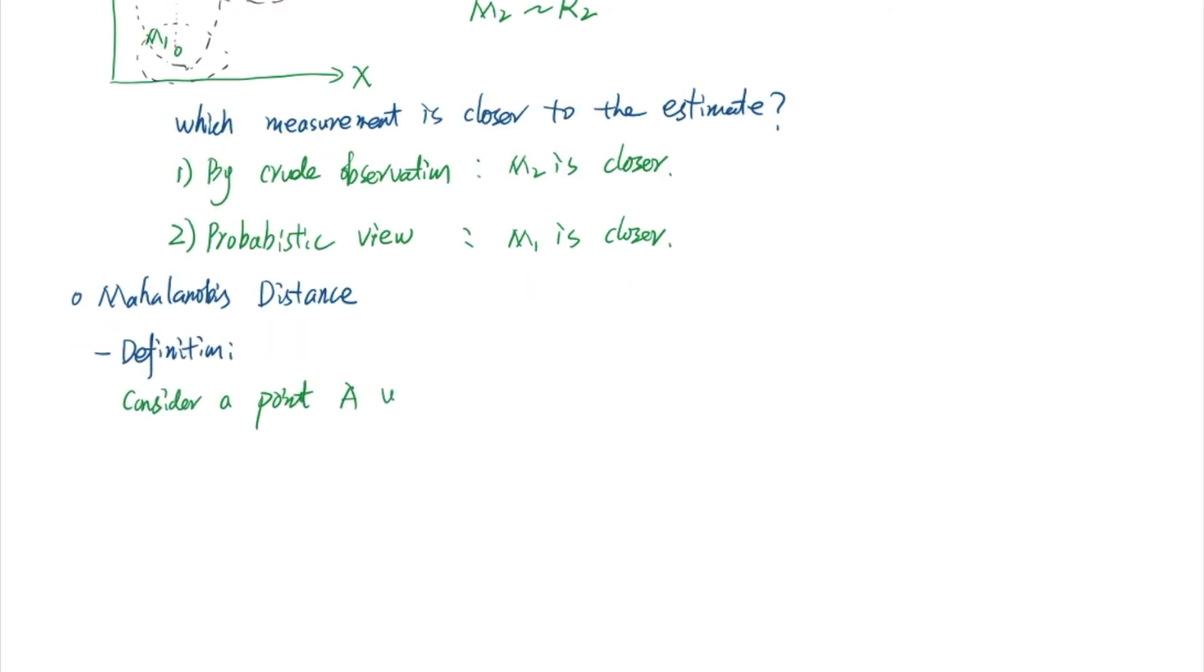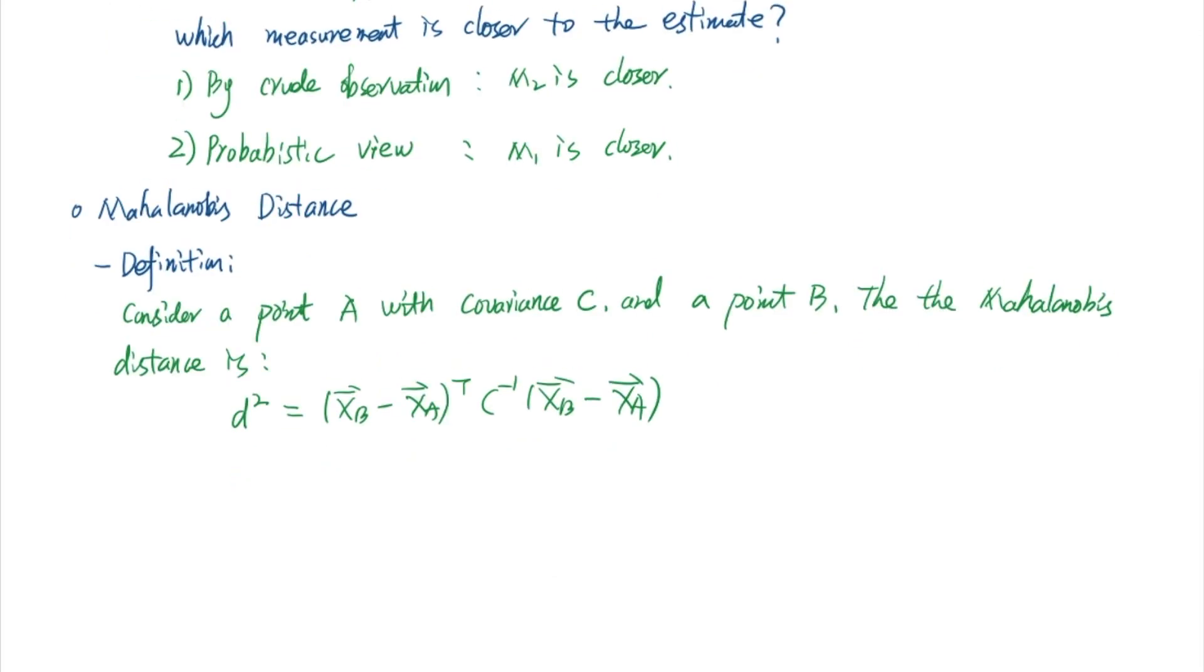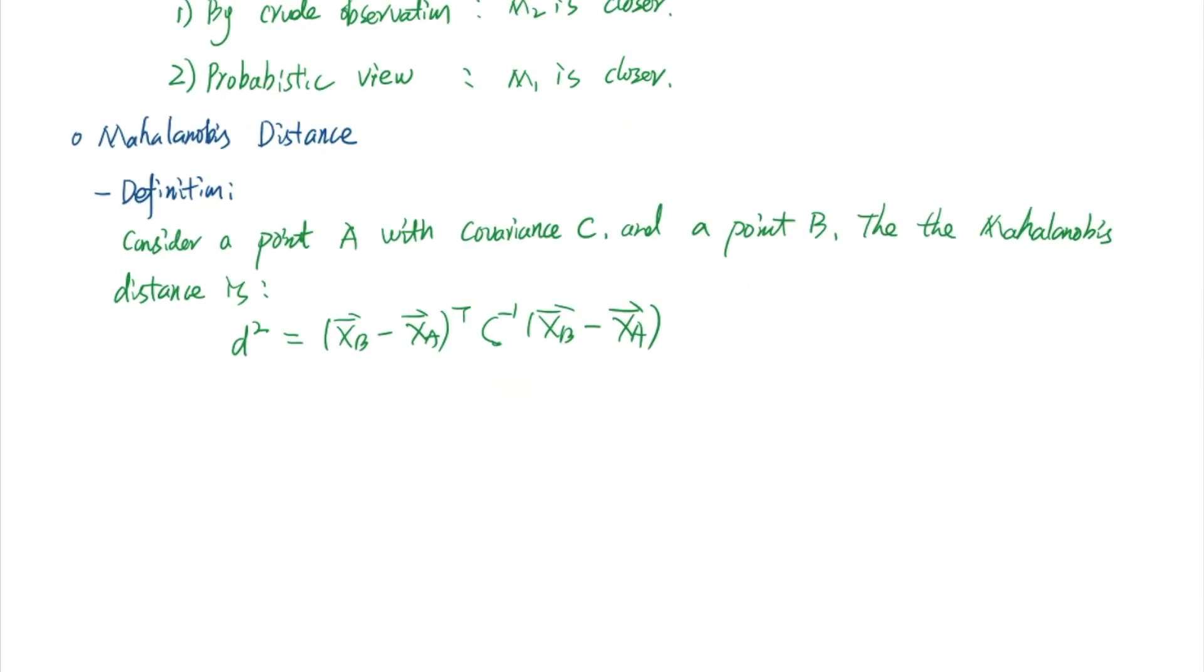So the definition is very simple. We consider point A with covariance C and point B. The Mahalanobis distance is just given by this quadratic form. Here, XB is the position coordinate for point B, which can be an n by 1 vector.